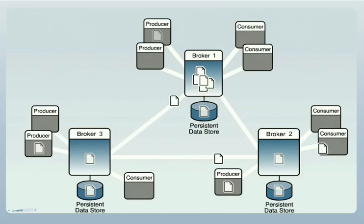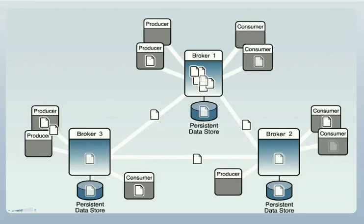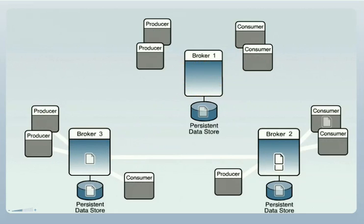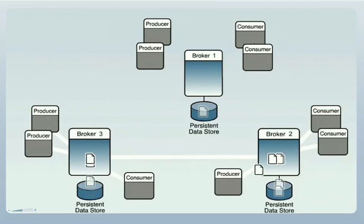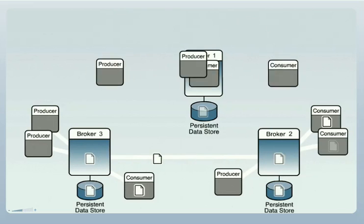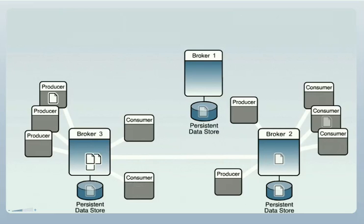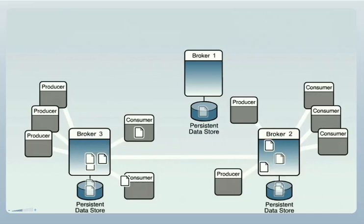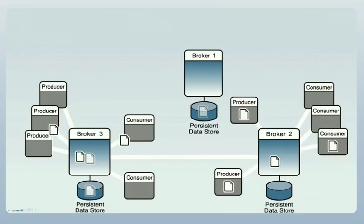What happens if one of the brokers in the cluster fails? All message production and delivery for that broker stops. However, the remaining brokers in the cluster continue to function normally. In addition, the producers and consumers that had been connected to the failed broker will reconnect to a different broker in the cluster and continue to produce and consume messages. In this way, a broker cluster provides for continuous message service availability, even in the face of broker failure.